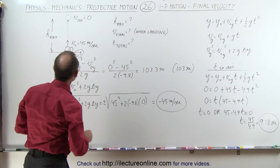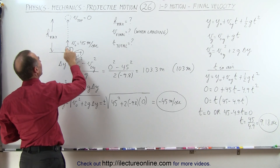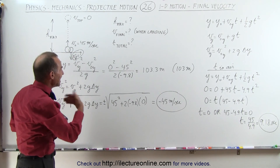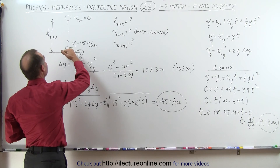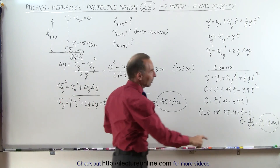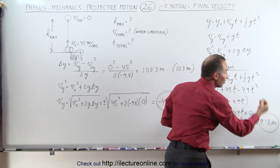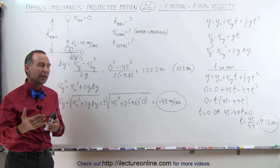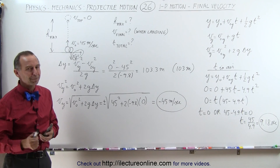Whatever initial velocity the object has in the y direction when it leaves the ground, when it comes back down it will have that same magnitude velocity in the opposite direction — negative 45 m/s on the way down versus positive 45 m/s on the way up. Also, the time to reach maximum height is exactly the same as the time to come back down. Half of 9.18 is 4.59 seconds to reach maximum height, and 4.59 seconds to return. Now let's look at more projectile problems to understand how to find maximum height, maximum range, and more.